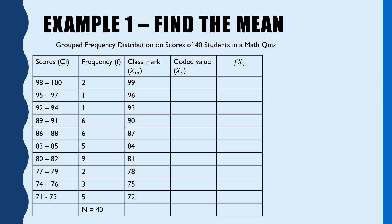Alright, let's have this example. I will use a pen — it's better to use a different color this time. So, we have here our class intervals. Let's count them: 1, 2, 3, 4, 5, 6, 7, 8, 9, 10. So there are 10 class intervals.